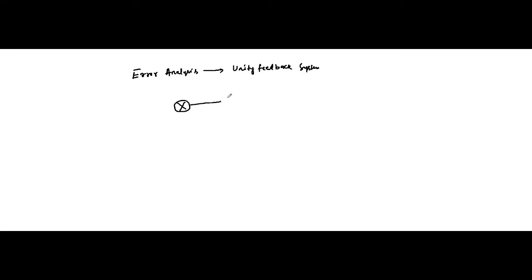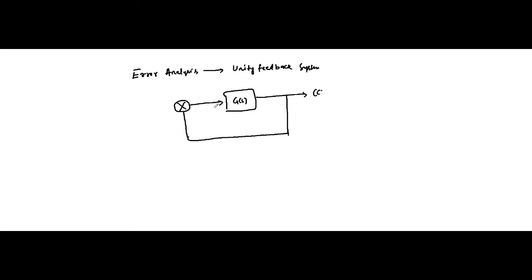The system is generally something like this — this is the forward path transfer function with unity feedback, meaning the gain of the feedback path is equal to unity. This kind of system we are normally dealing with, where the feedback path gain is equal to one.